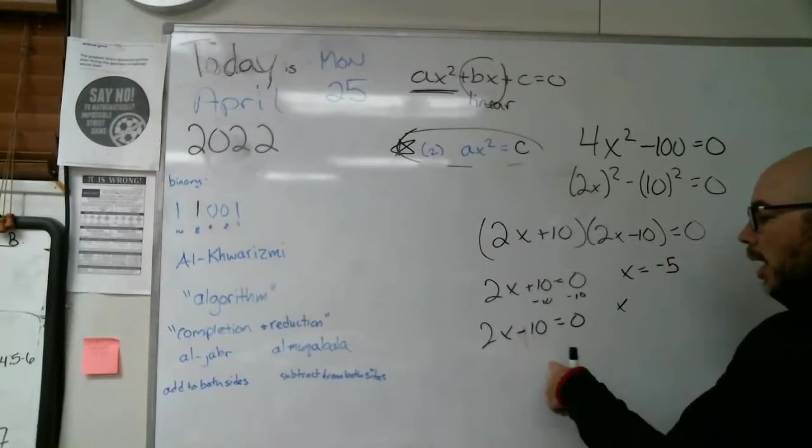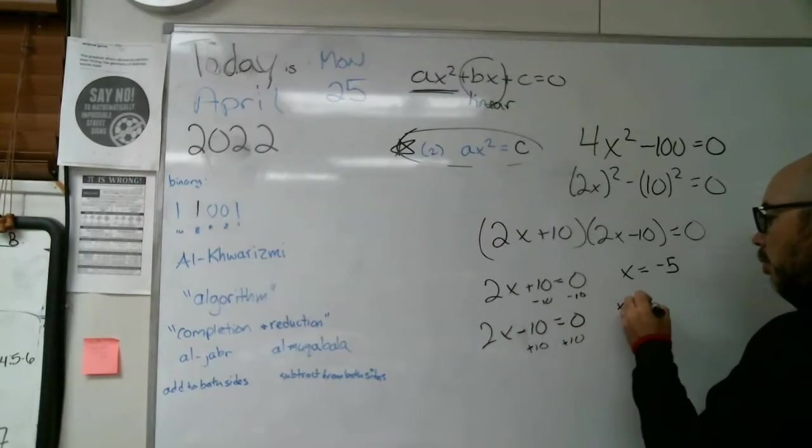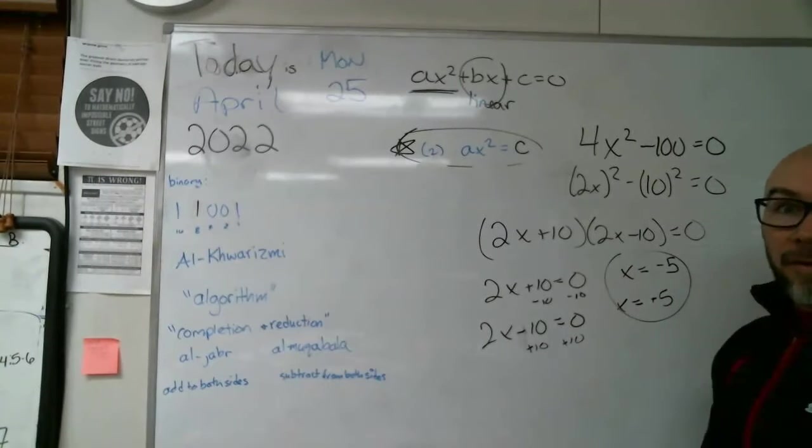So take away 10 from both sides and then divide by two. That gives us x is negative 10 over two, which is five. And here we would add 10 to both sides and then divide by two and get x is a positive five. You get plus or minus five. All right.